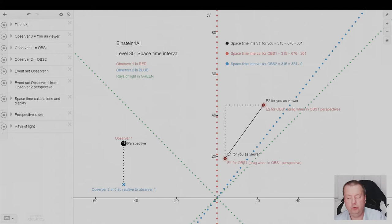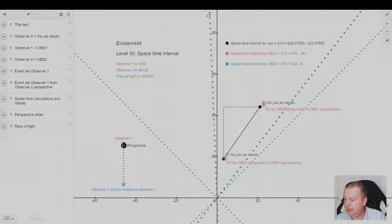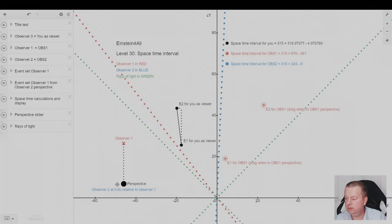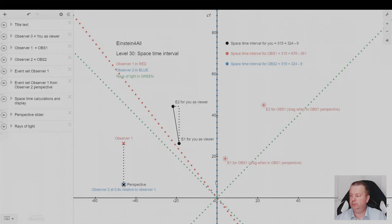You can go there with your mouse, click it, and drag it all the way down, and we are changing our perspective from observer one to observer two. Boom! There we are in the perspective of observer two. From that perspective, CT squared is 324, and the difference along the X axis squared is just 9. But again, the equation will end up at 315.